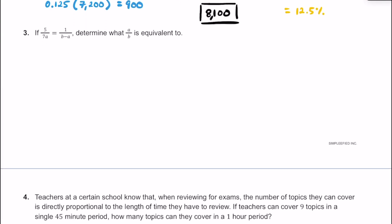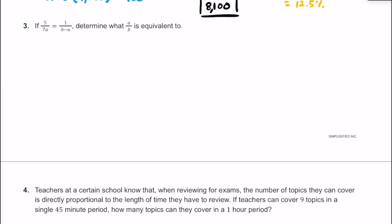Let's check out number three. If the ratio of 5 to 7a is equal to the ratio of 1 to b minus a, we have to figure out what a over b is equivalent to. Let's rewrite this proportion. Our goal is to get the a over b ratio by itself. I'm going to use cross products to rearrange this. So 7a times 1 is just going to be 7a, and on the other side, we have 5 multiplied by the quantity b minus a.